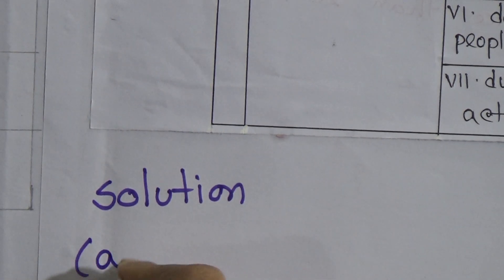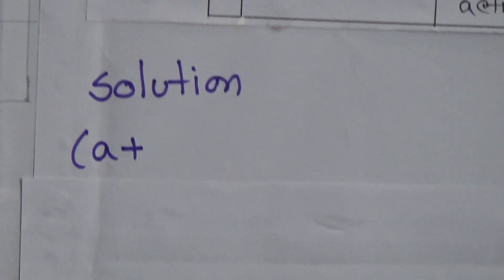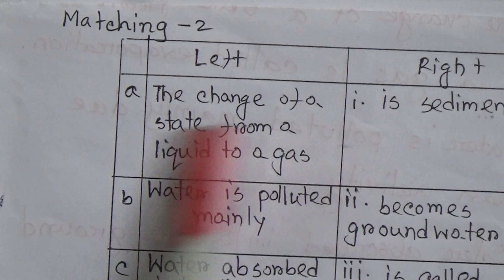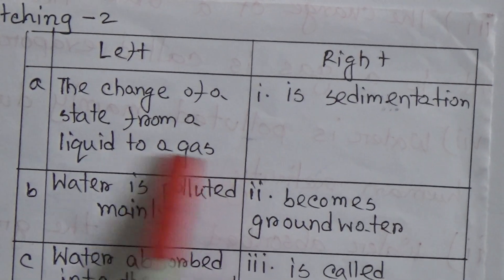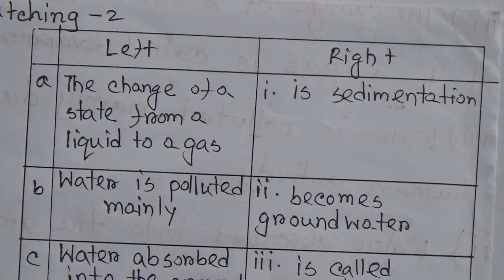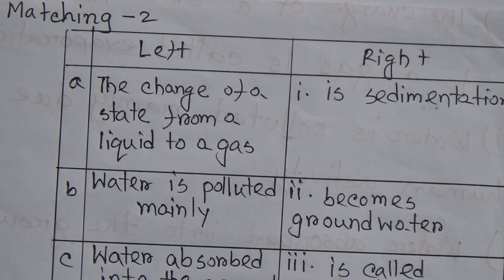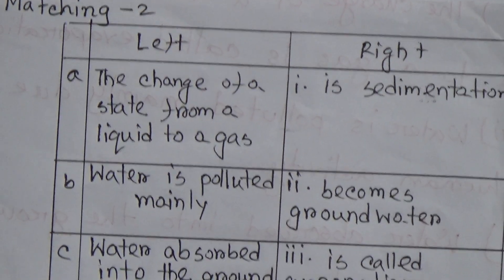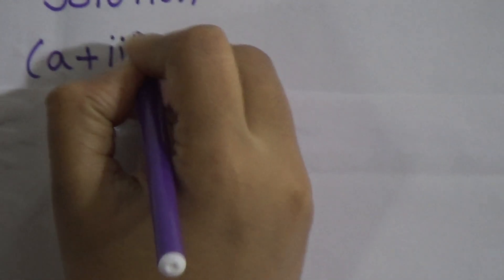Now for the second matching: A — the change of a state from a liquid to a gas — it will match with 3, is called evaporation. That means A matches with 3.